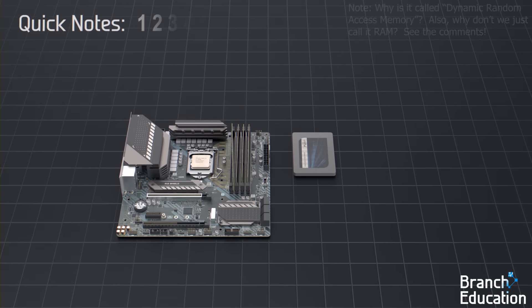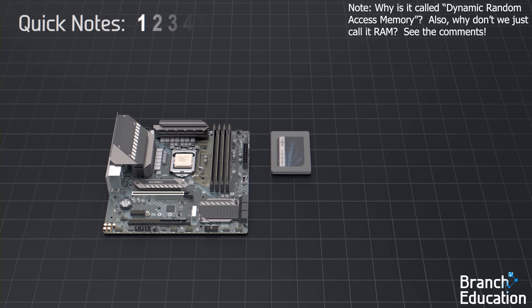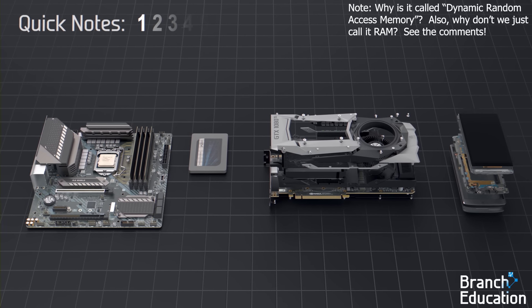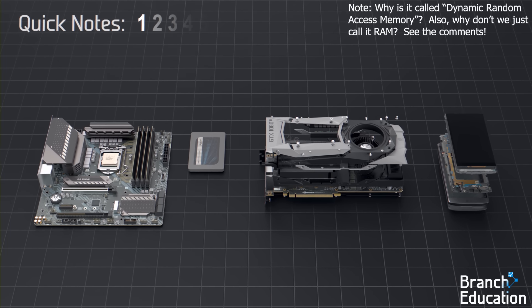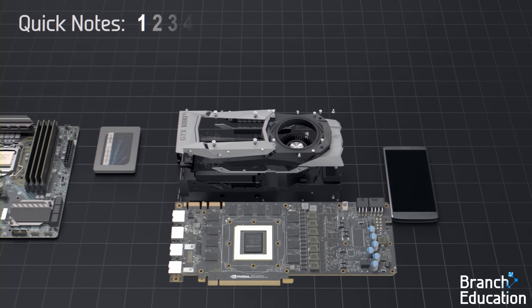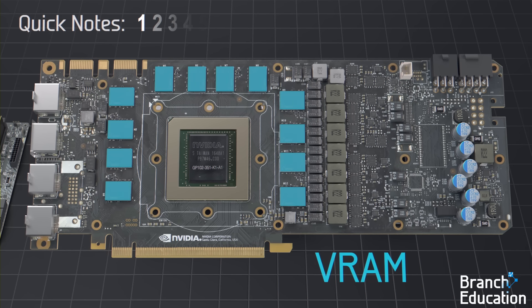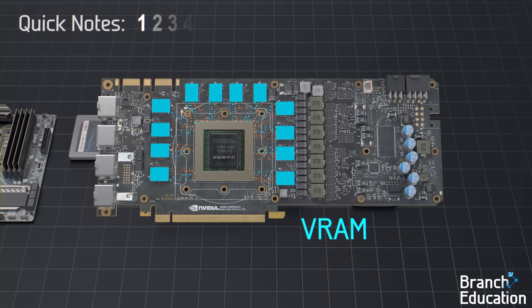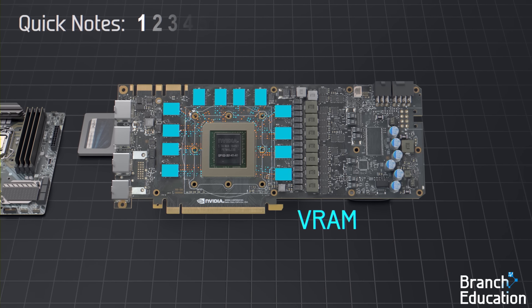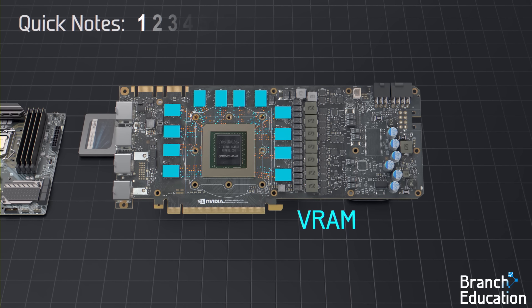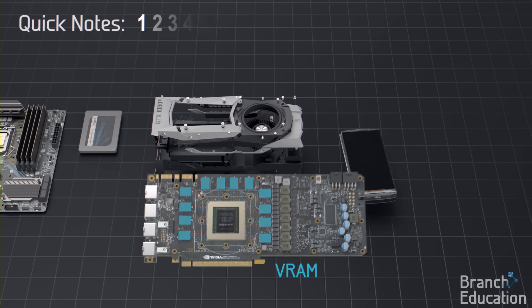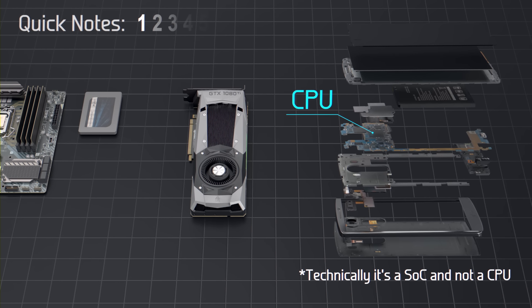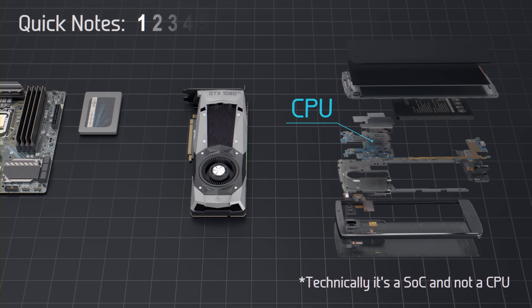A few quick notes. First, you can find similar DRAM chips inside GPUs, smartphones, and many other devices, but with different optimizations. GPU DRAM, or VRAM, located all around the GPU chip, has a larger bandwidth and can read and write simultaneously, but operates at a lower frequency. And DRAM in your smartphone is stacked on top of the CPU and is optimized for smaller packaging and lower power consumption.